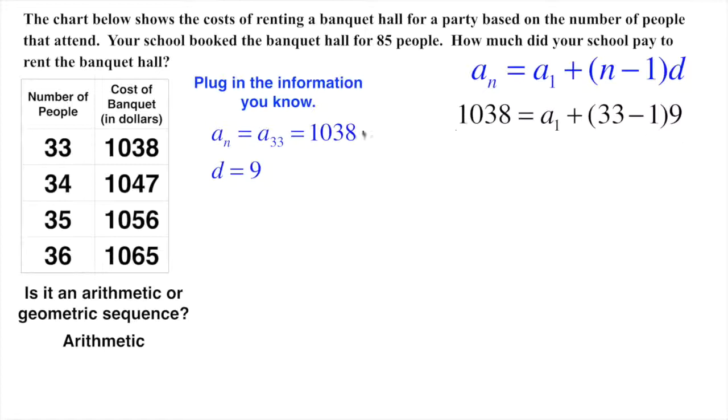We'll plug that in here, and the difference is going to be 9. We plug in the 1,038. That's our a of n. This is 33. This is the 33rd term, which means for our n, that's going to be 33. We just plug that in here. Difference of 9, that means between 1,038 and 1,047, there are 9 units in between these. In this case, it's dollars, so it would be $9 difference.